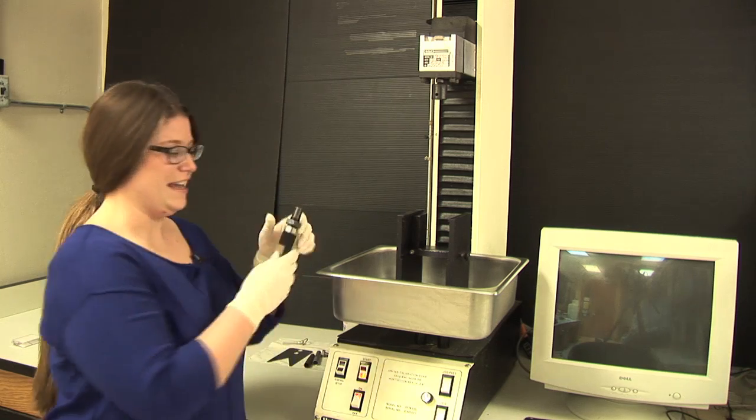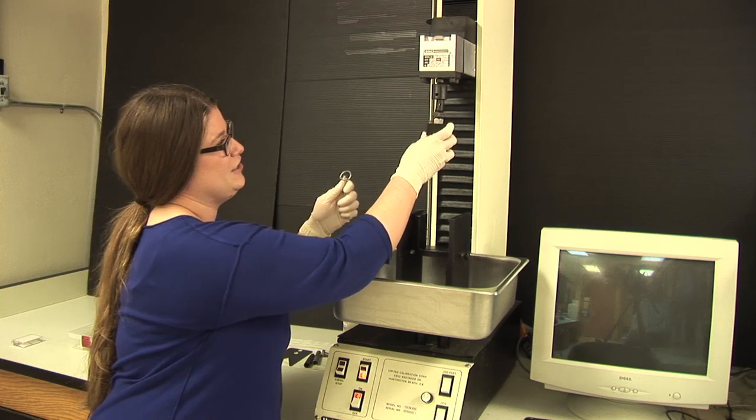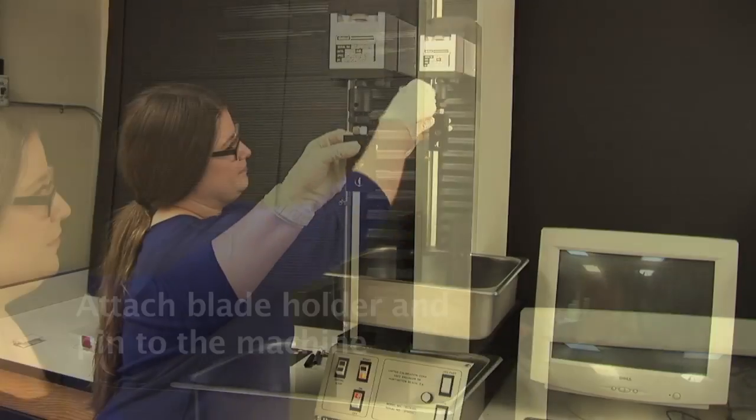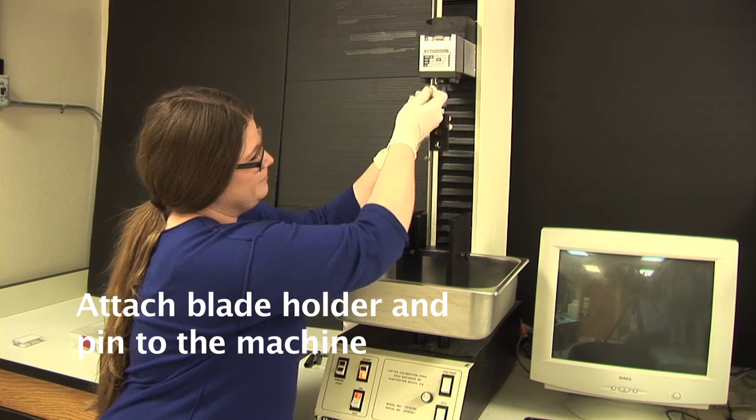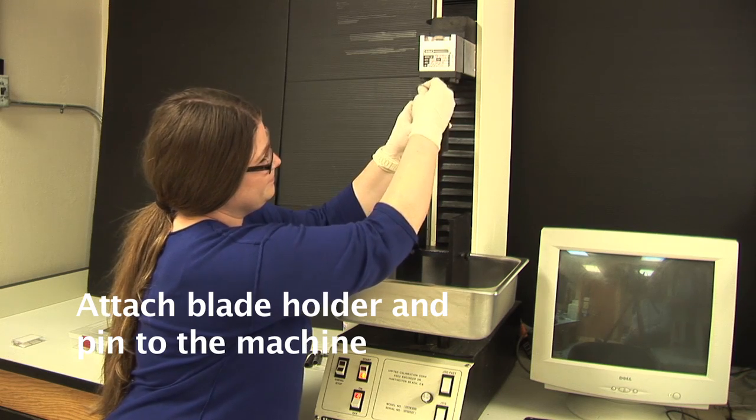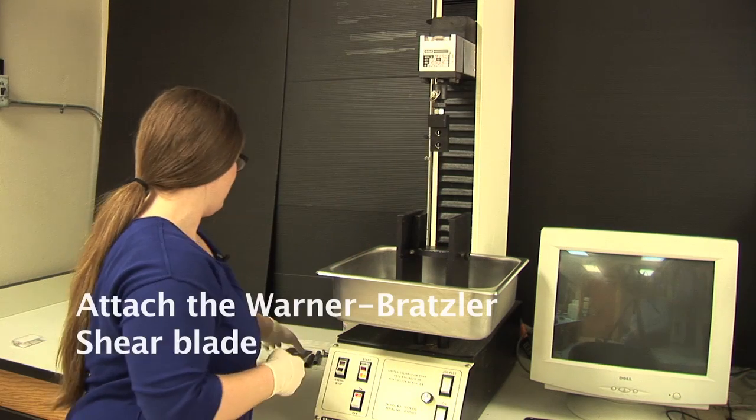So first we're going to take the blade holder and the pin and attach it to the machine holder and insert it into this holder by putting the pin inside to adhere it to the machine. Sticking the pin into the machine will hold the blade holder.